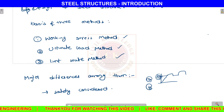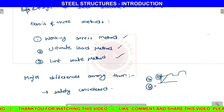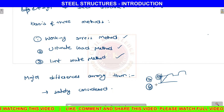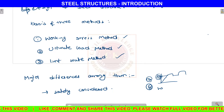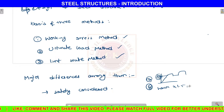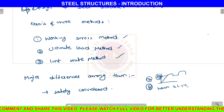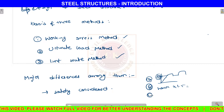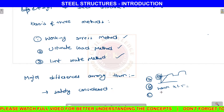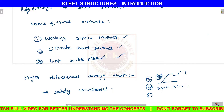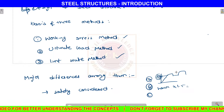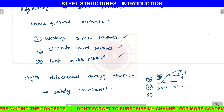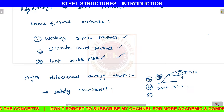Next is the ultimate load method. That is the ultimate load method. Next is the limit state method. That is the working stress method and ultimate stress method combined. In the reserve strength method, we can't change the material strength.